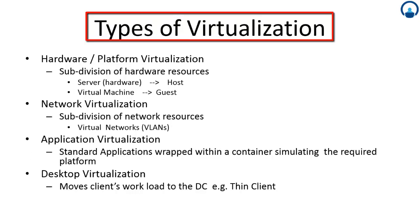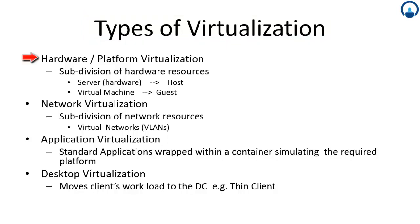Now what are the types of virtualization? There are a few different types. The first is hardware or platform virtualization, which means a subdivision of the hardware resources. The server hardware is called the host machine, and the virtual machine — that is the instance of the operating system running on that host machine — is called a guest.